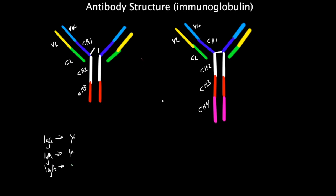IgA has an alpha heavy chain. IgE has an epsilon heavy chain, and IgD has a delta chain.